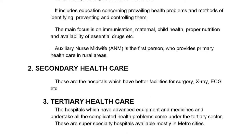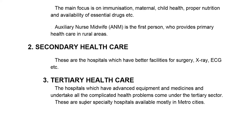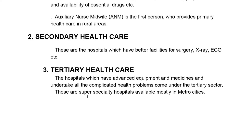Coming to a secondary health care center, these are hospitals which have better facilities, like those with X-ray machinery and ECG machinery — they will probably be present in district hospitals. Coming to tertiary health care units, these are hospitals which have advanced equipment, like super-speciality hospitals, and are mostly available in metropolitan cities.